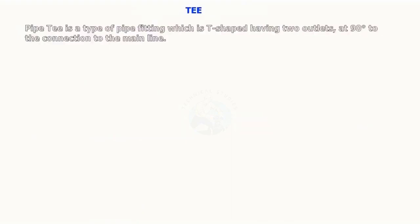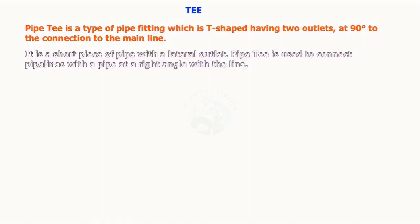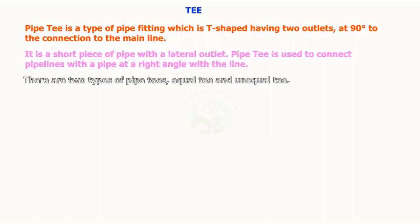Pipe T is a type of pipe fitting which is T-shaped, having two outlets at 90 degrees to the connection to the main line. It is a short piece of pipe with a lateral outlet. Pipe T is used to connect pipe lines with a pipe at a right angle with the line. There are two types of pipe T's: equal T and unequal T.